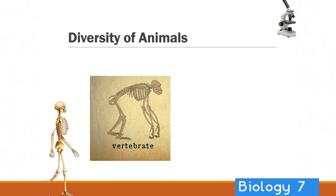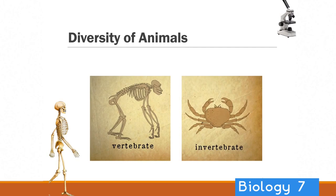Now let's look at the differences between vertebrates and invertebrates. Do you know what the difference is? Well, the main thing is that vertebrates have got a backbone. The crab there does not have a backbone. There are lots of animals that are invertebrates, and also lots that are vertebrates. There's that backbone.